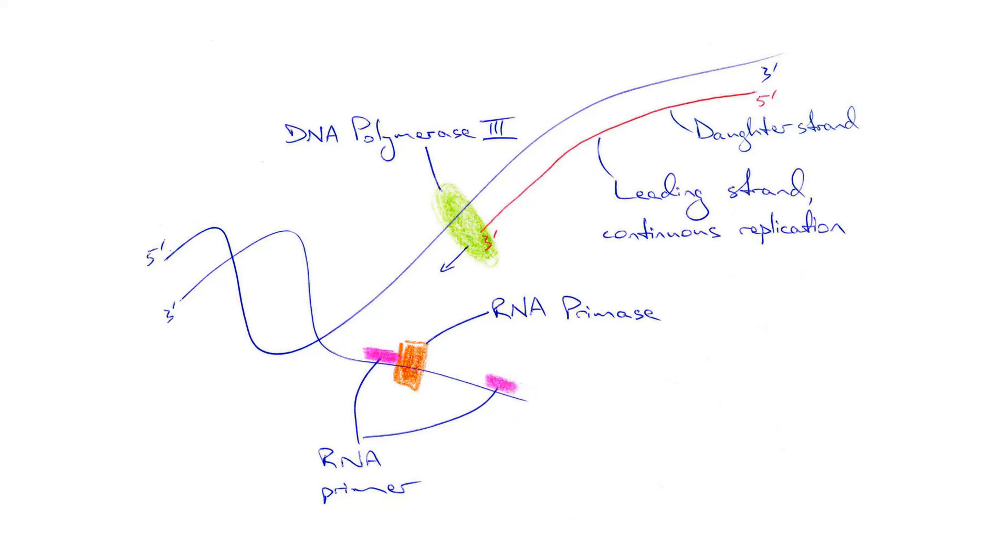As helicase continues to unzip more of the double-stranded DNA, the DNA polymerase 3 making the leading strand can simply follow along making the newly formed daughter strand longer and longer.